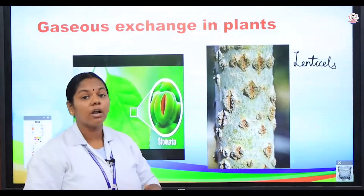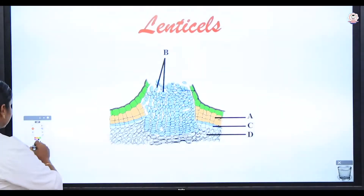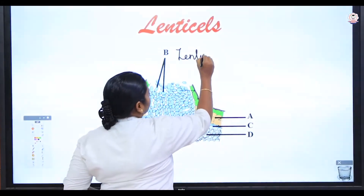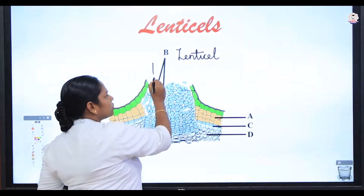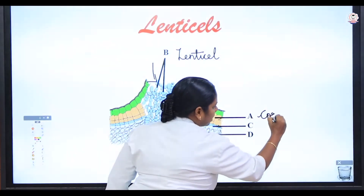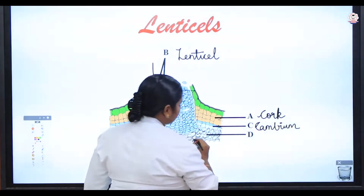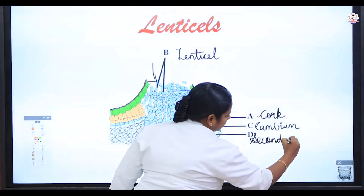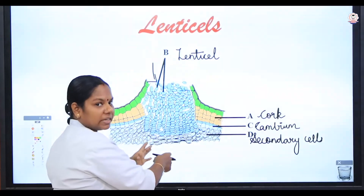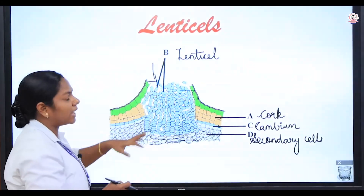We know that photosynthesis and respiration are opposite to each other. Now let us see the structure of the lenticel. The lenticel consists of four main parts. Part A is marked as cork, C is cambium, and next are the secondary cells. The gases diffuse into the plants through the stomata or the lenticels and are diffused out through the lenticels. So in higher plants, the gaseous exchange takes place through the lenticels.